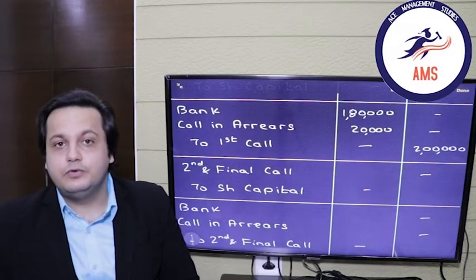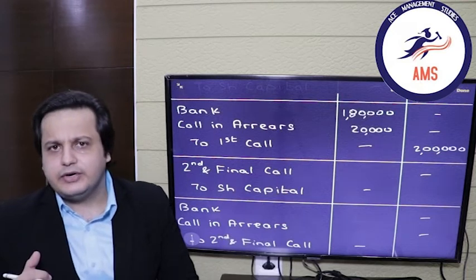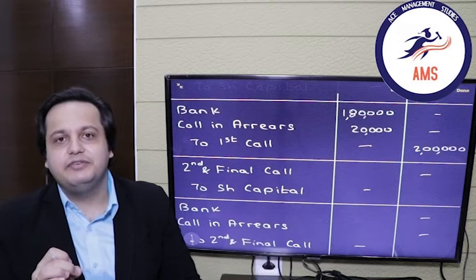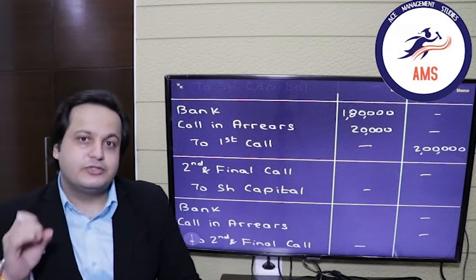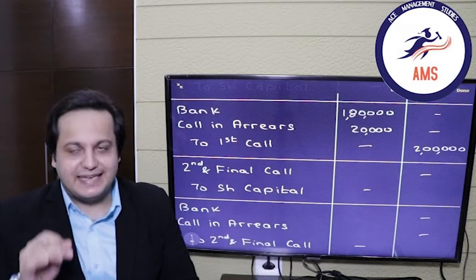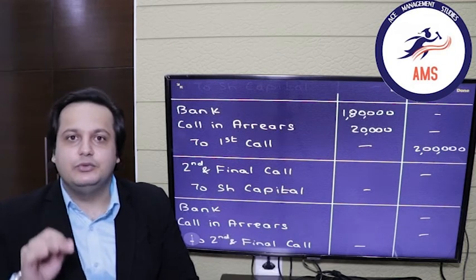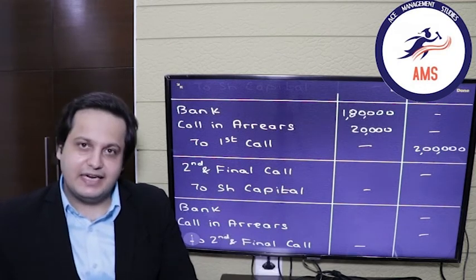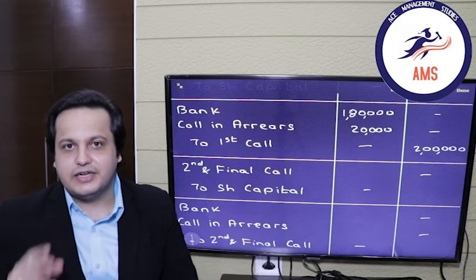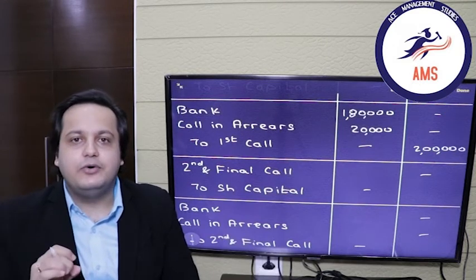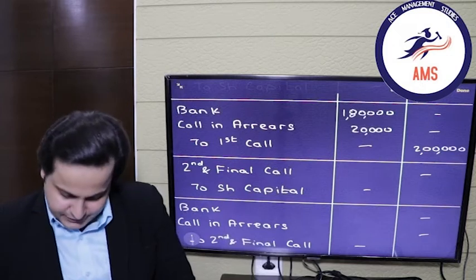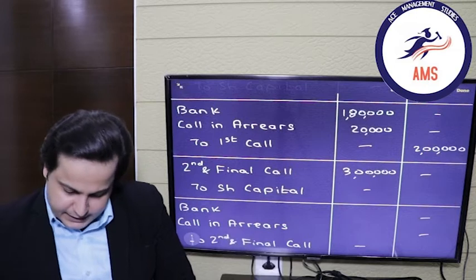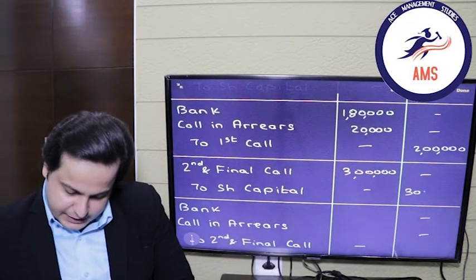Next we move to the second and final call. Following the trend, we first capitalize it — make it due. The capitalizing entry: second and final call account debit to share capital. The number of shares is 1 lakh, and the second call amount is 3 rupees, so the total is 3 lakh rupees. Second and final call account debited by 3 lakhs, share capital credited by 3 lakhs.